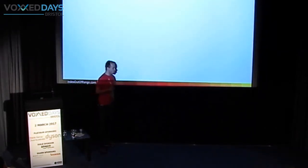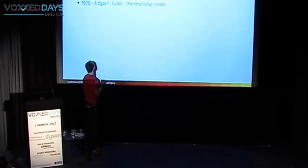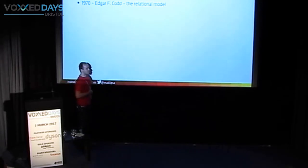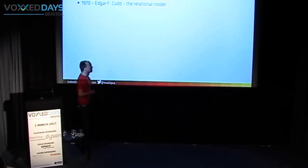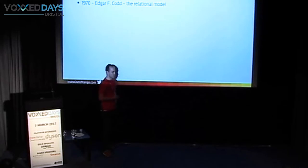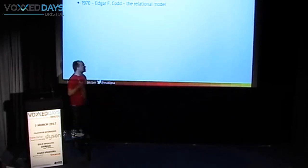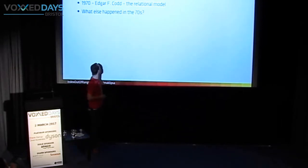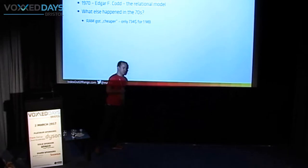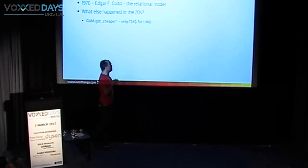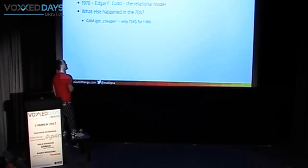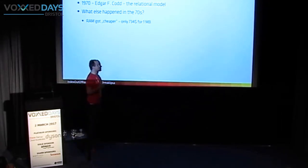Let's see when the relational model actually came into being. It came into being in 1970 with Mr. Codd, who wrote a paper called 'Relational Model,' in which he described how he imagined data should be stored and how we should look at data. To understand why it gained enough traction that we are building thousands of systems with relational databases, let's look at what else happened in the 1970s. First, RAM got a lot cheaper — in two years we went from more than $2,500 down to only $300 for 734 megabytes.